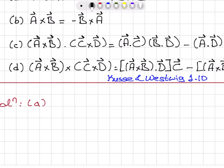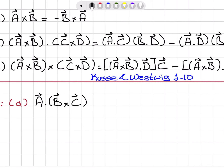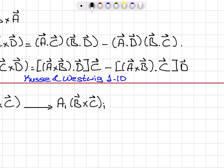We have vector A dot product with the cross product between B and C. In subscript summation notation, that means we are multiplying the ith component of vector A with the ith component of vector B cross C and adding them up because we have a repeated index. How do I represent the ith component of the cross product using subscript summation notation? For example, this is epsilon_KLI B_K C_L.